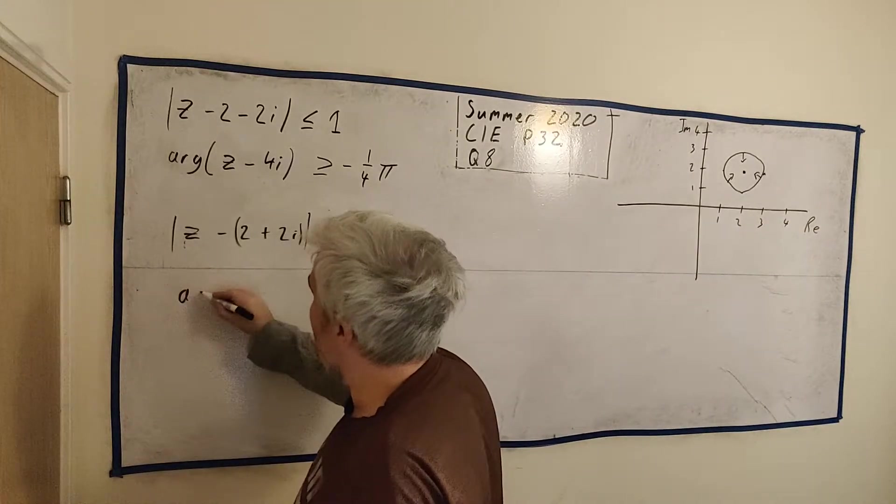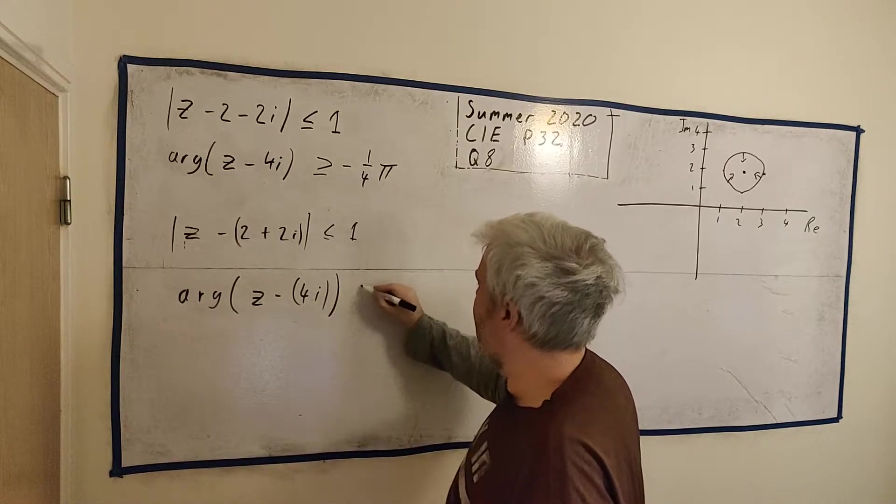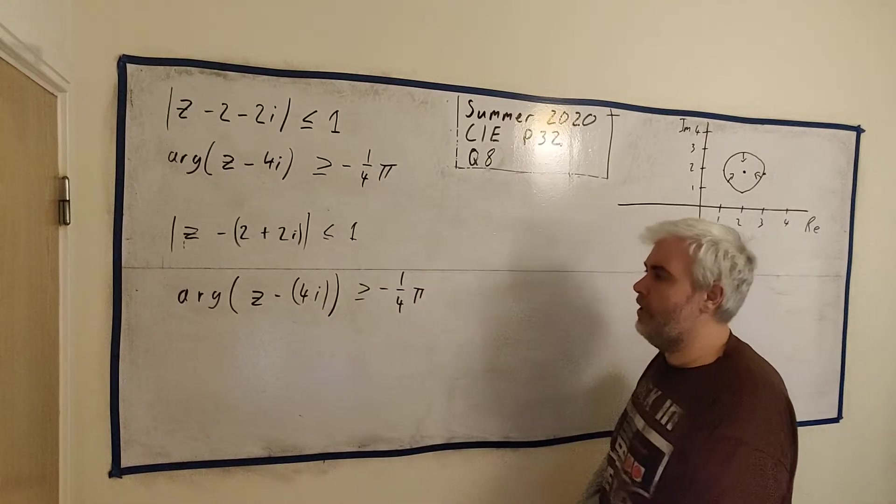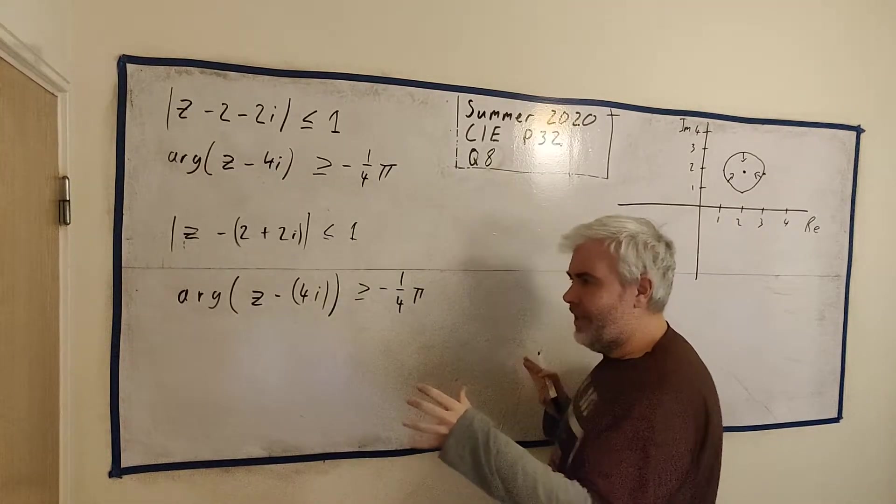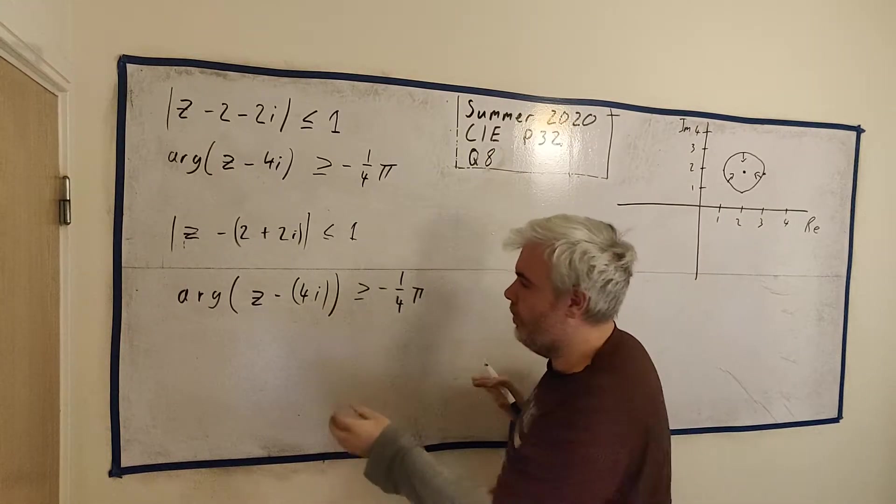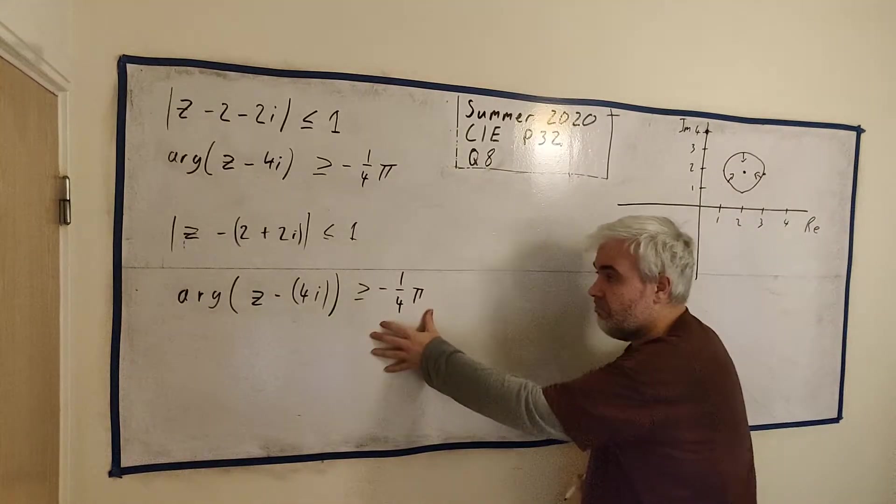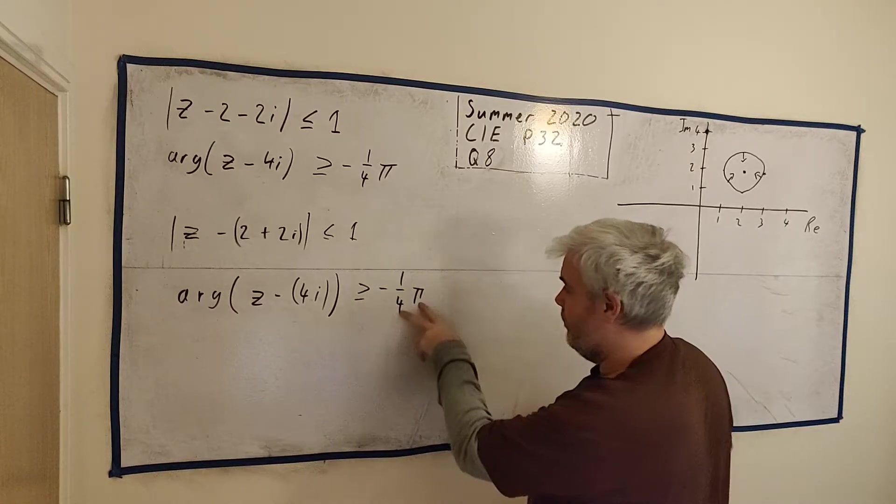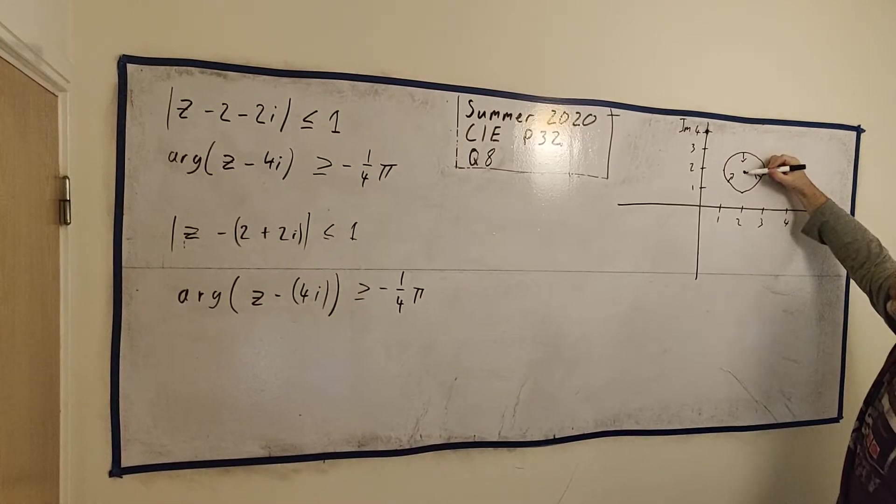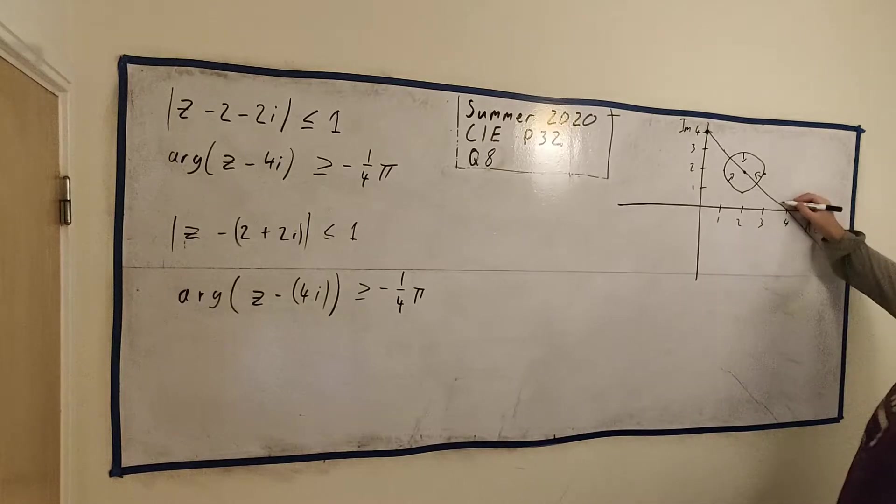The next one I rewrite as z minus 4i, but I changed the sign of 4i if you see what I mean. That is bigger than minus 1 over 4 pi. When I take away something here, I change where the origin is. Instead of going from 0,0, I'm going to start at 4i, I'm going to start up here. And then I just read this angle. This angle is minus 45 degrees or pi over 4. So I just go down 45 degrees.